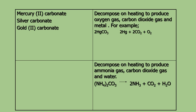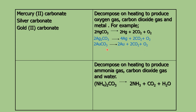Mercury(II) carbonate, silver carbonate, and gold(II) carbonate decompose on heating to produce oxygen gas, carbon dioxide gas, and the metal. For example, mercury(II) carbonate produces mercury, carbon dioxide, and oxygen. Silver carbonate produces silver, carbon dioxide, and oxygen. For gold(II) carbonate — Au²⁺ combined with carbonate gives Au₂CO₃ — it produces Au, CO₂, and oxygen. Try to write down the equation.